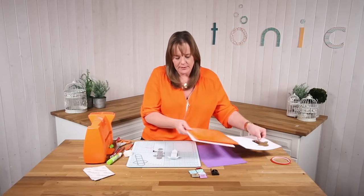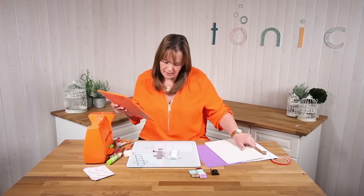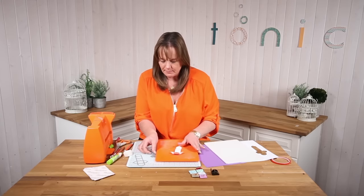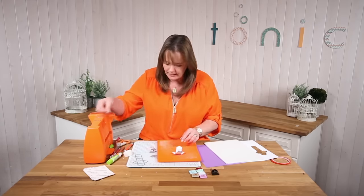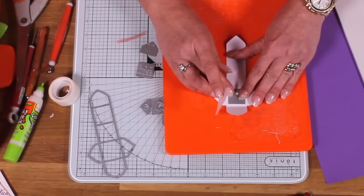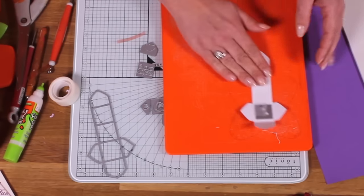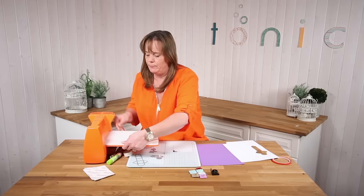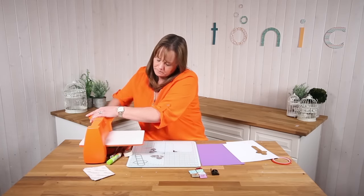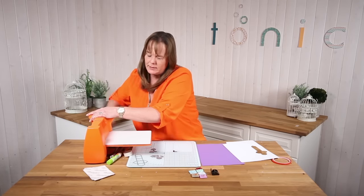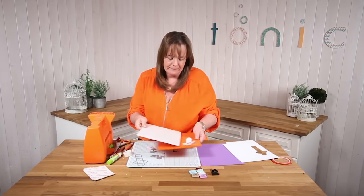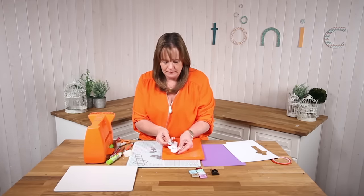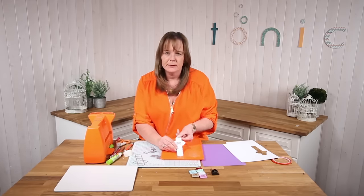So what we're going to do, first of all, is I think I'm going to have I love you as my main message. So that there is a little verso die. I'm going to take that inside there, and I'm going to run that through the machine. So that is going to cut all those letters into it. I love you.